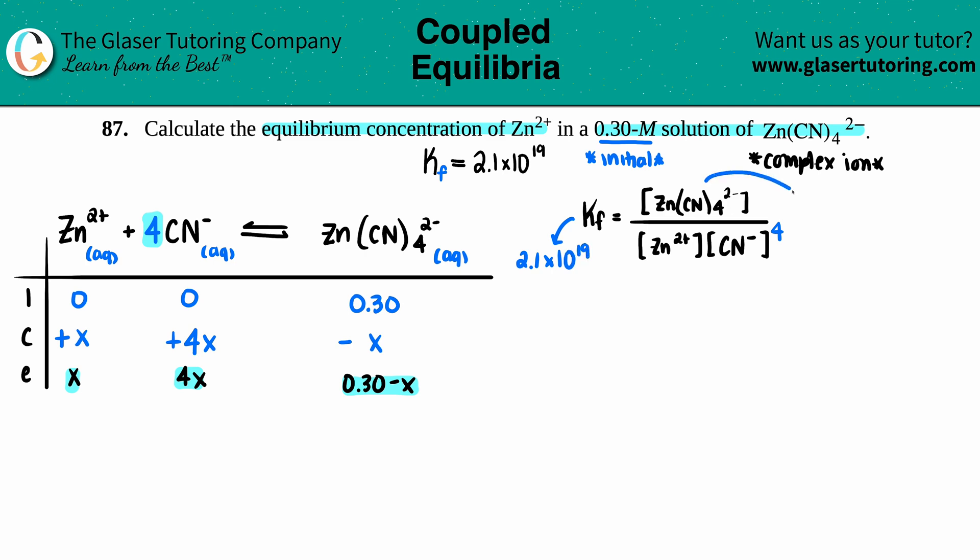Kf is 2.1 times 10 to the 19th. This value is 0.30 minus x, the zinc is x, and CN⁻ is 4x. Anytime you see something like a number minus x with equilibrium values, you'll have to do the quadratic equation. We like to assume first, then see if your answer is valid. Since this value is so high, that means at equilibrium you have mostly products.